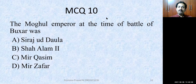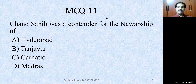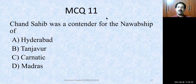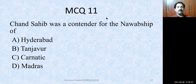MCQ number 10: The Mughal Emperor at the time of the Battle of Buxar was none other than Shah Alam II. Congratulations to all of you for quickly answering. MCQ number 11: Chanda Sahib was a contender for the Nawab position — of Hyderabad, Tanjore, Carnatic, or Madras? The clue is that Arcot was its capital. The correct answer is Carnatic. Chanda Sahib was the contender for the post of Nawab of Carnatic.